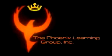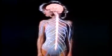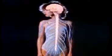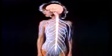The nervous system — the brain, spinal cord, and nerves — is a living communications network carrying various kinds of messages to and from the different parts of your body.